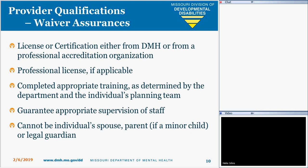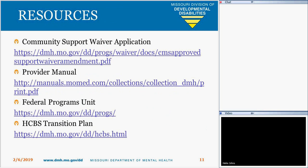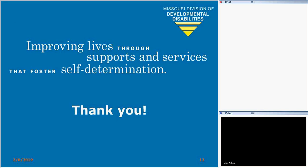Here are a few important and helpful resource links: the Community Support Waiver Application, the Current Approved DD Waiver Manual, the Federal Programs Unit, and the HCBS Transition Plan. Thank you for your time and we hope this webinar was helpful.